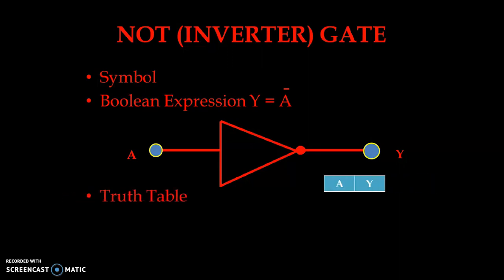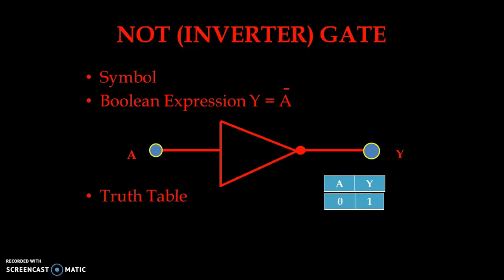A is the input and Y is the output. Since there is only one input, 2 raised to 1 gives us only two possible conditions. If we apply input low, it is inverted, so we get high output. And when we apply high input it is again inverted — we get low output. This way we can draw our inverter — we have the boolean expression and the truth table for the inverter.